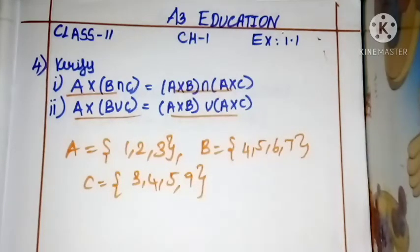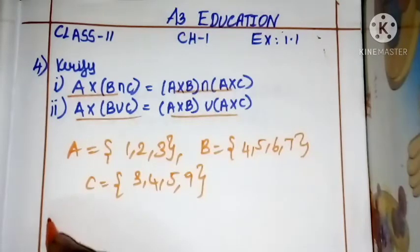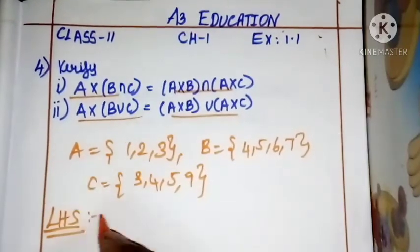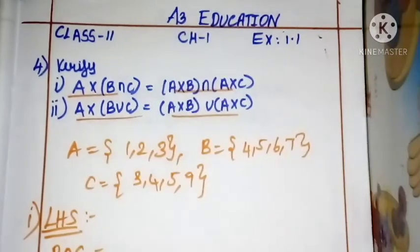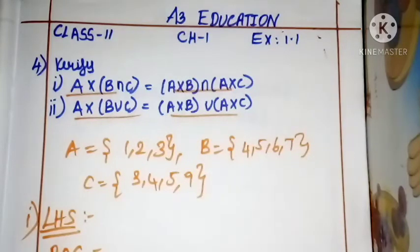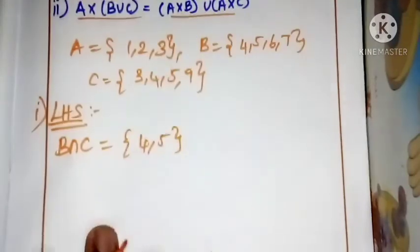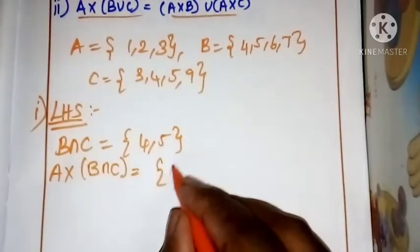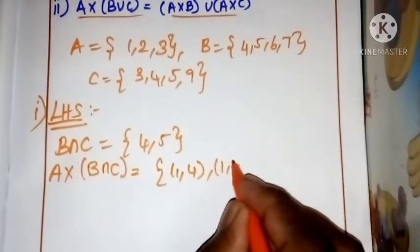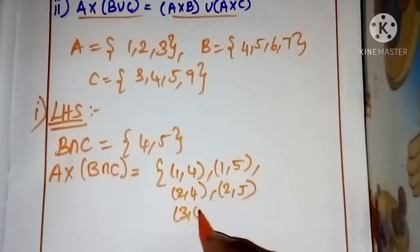If we show you number one, we will show you the number. Now one is the first LHS. First, the sub-division is LHS. B intersection C. You got 4, 5. A cross B intersection C: (1,4), (1,5), (2,4), (2,5), (3,4), (3,5).